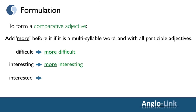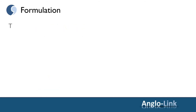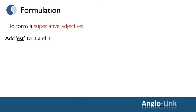The same applies to 'interested' — 'more interested'. Now look at 'loved': it is a one-syllable word, but it is a participle adjective, therefore you should also say 'more loved'. Now, to form a superlative adjective, you must add -est to it and 'the' before it if it is a one-syllable word.